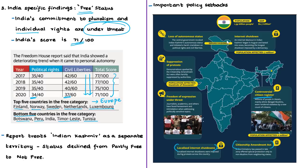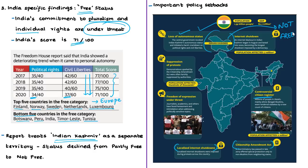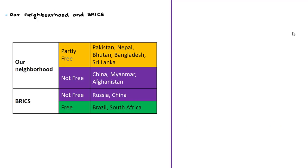The report mentions that this region witnessed revocation of autonomy under Article 370, dissolution of local elected institutions, heavy security crackdown curtailing civil liberties, and mass arrests of local politicians and activists. Because of these, the region's status declined from partly free to not free. As a whole, India remains in the free category. Neighbors Pakistan, Nepal, Bhutan, Bangladesh, and Sri Lanka are in the partly free category, while China, Myanmar, and Afghanistan are in the not free category.